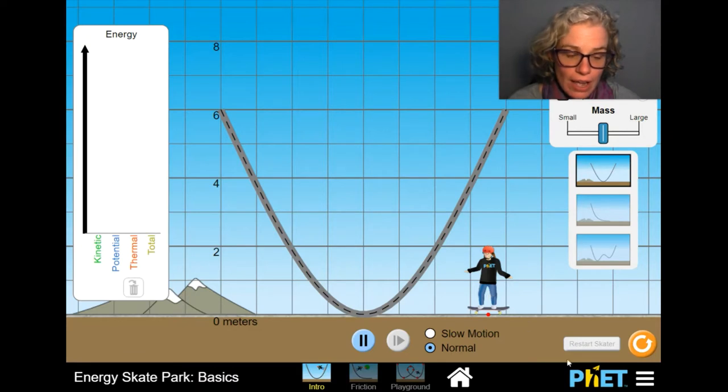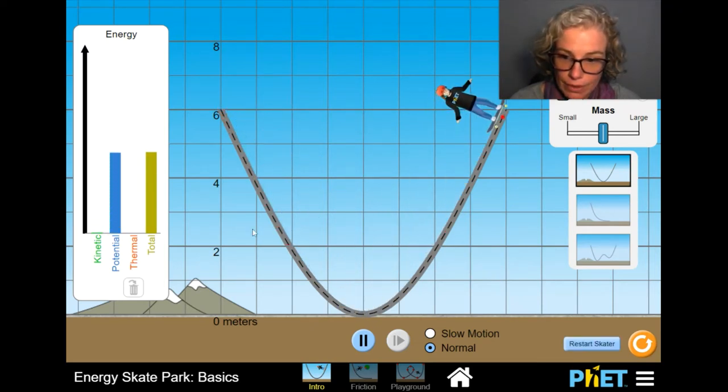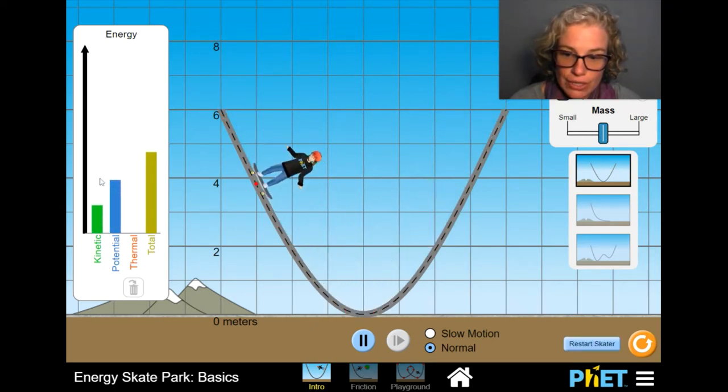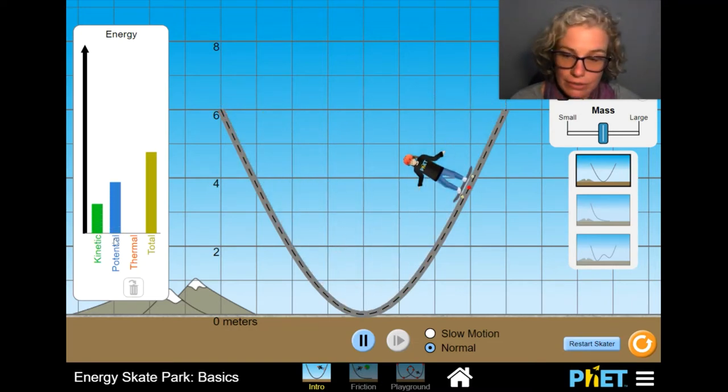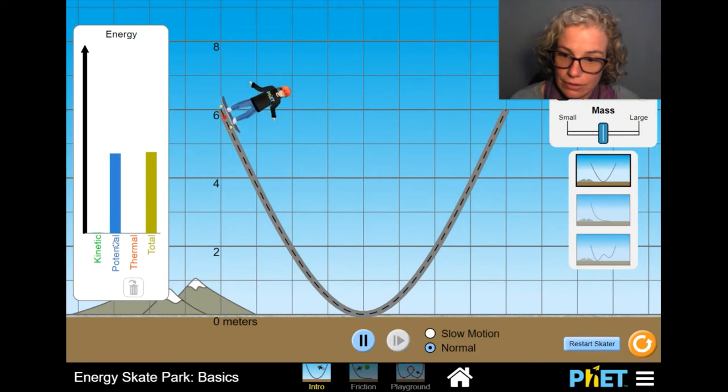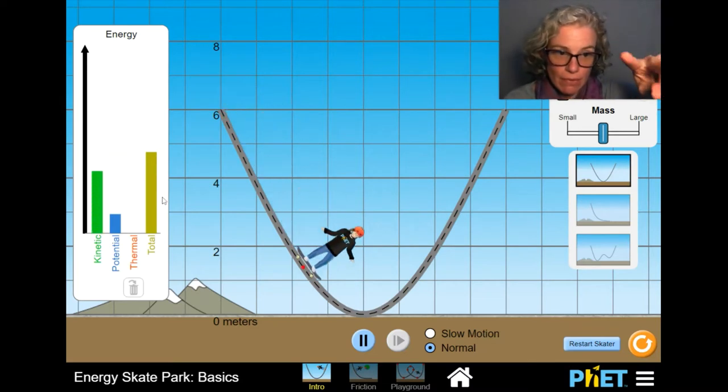So here we are on the PhET animation and we're going to go ahead and put our skater on the ramp. First thing I want you to notice is the relationship between kinetic and potential. See how as one goes up, the other goes down and they just keep alternating.